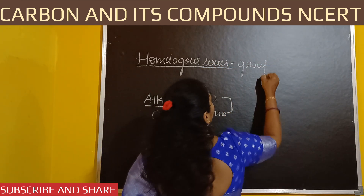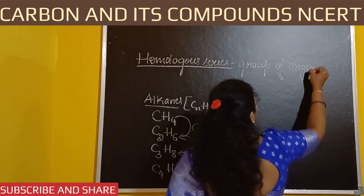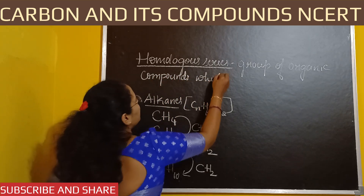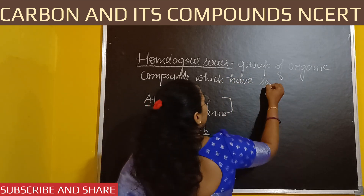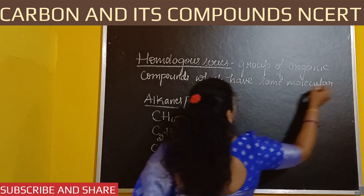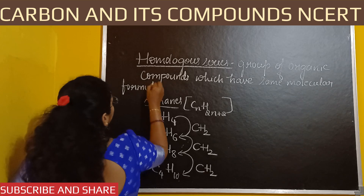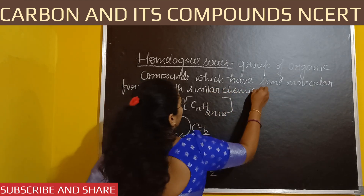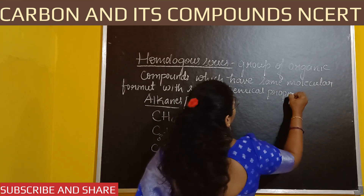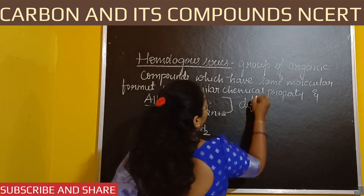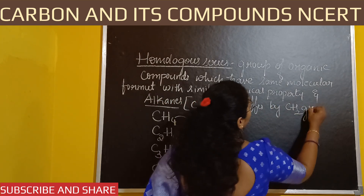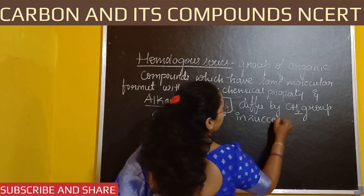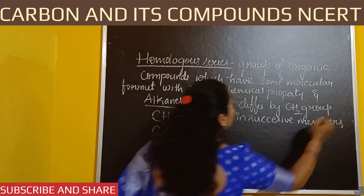Let us write the definition: Homologous series is a group of organic compounds which have the same molecular formula with similar chemical properties, and whose successive members differ by a CH2 group. This is how you will define homologous series.